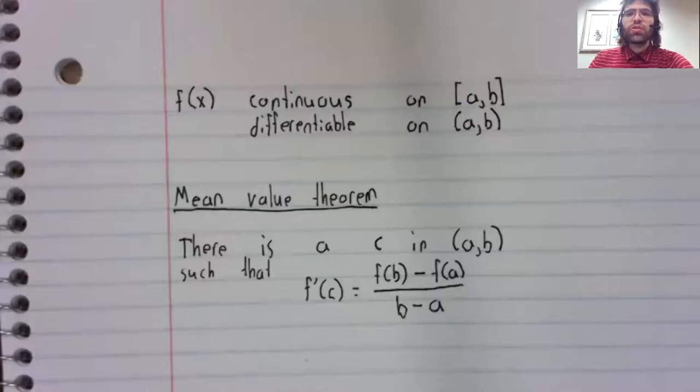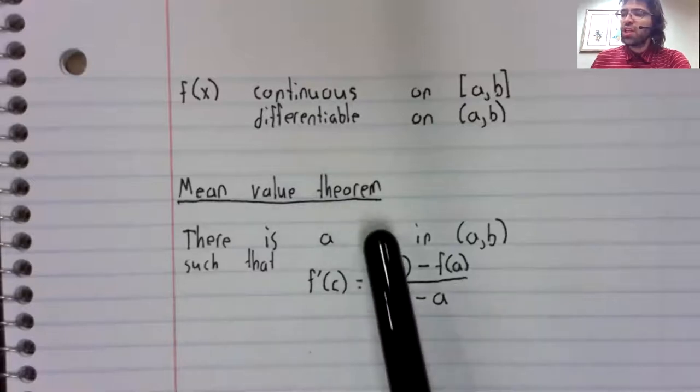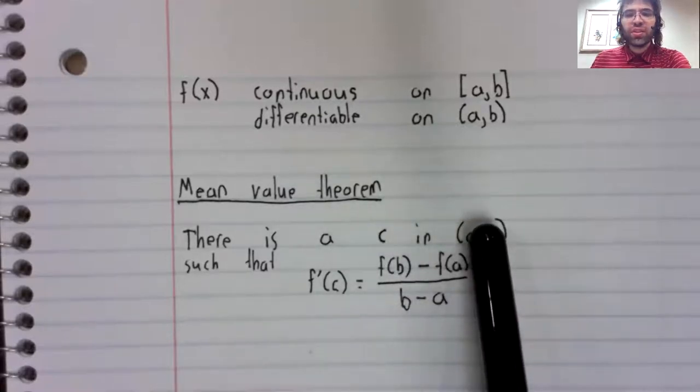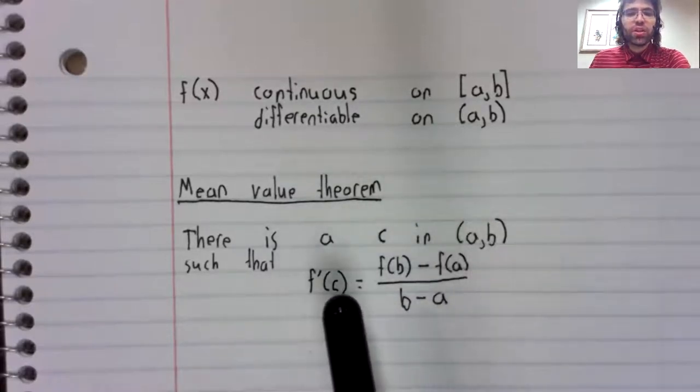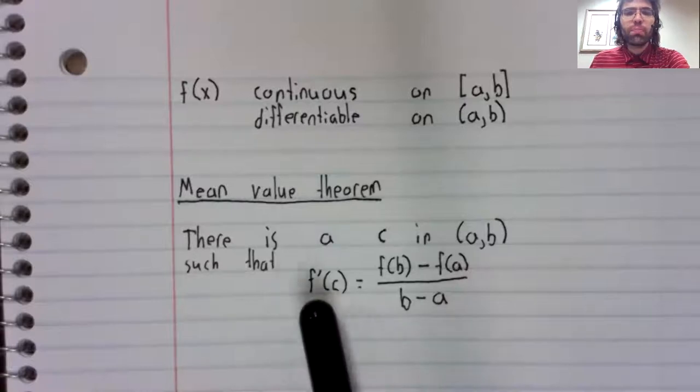Just like Rolle's theorem, the mean value theorem says there's a number c in this interval, such that the derivative at c is some special number.